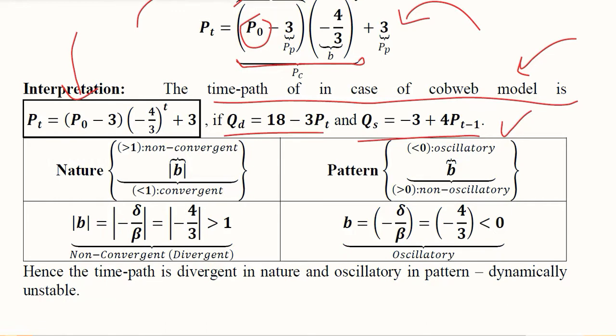We should also talk about the nature and the pattern of the time path because this is very much critical when it comes to dynamic stability. The nature is determined by the absolute value of b, which is equal to 4 over 3 minus sign, which we introduce the absolute with, and it will get rid of the minus sign. It is still greater than 1, which is implying that it is non-convergent or it is divergent, because 4 over 3 is greater than 1.